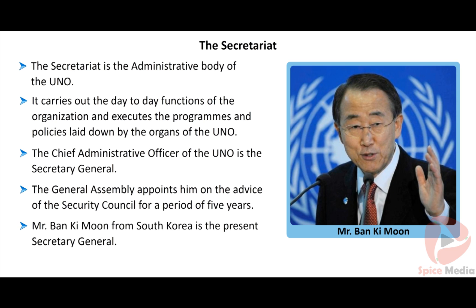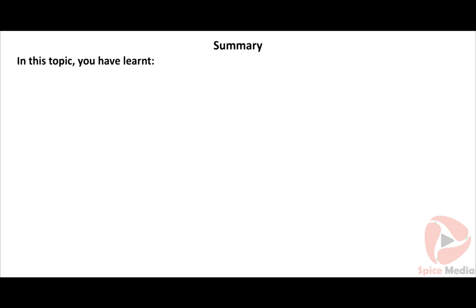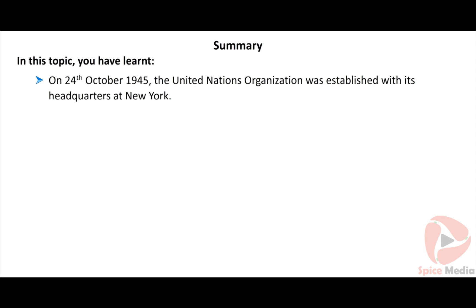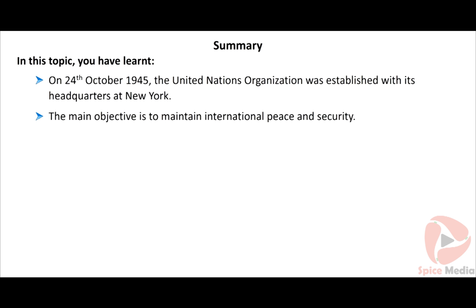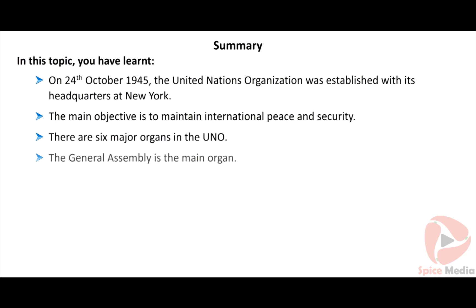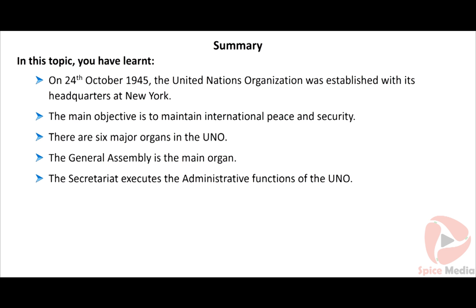Mr. Ban Ki-moon from South Korea is the present Secretary General. In summary: on 24th October 1945, the United Nations Organization was established with its headquarters at New York. The main objective is to maintain international peace and security. There are six major organs in the UNO; the General Assembly is the main organ, and the Secretariat executes the administrative functions.